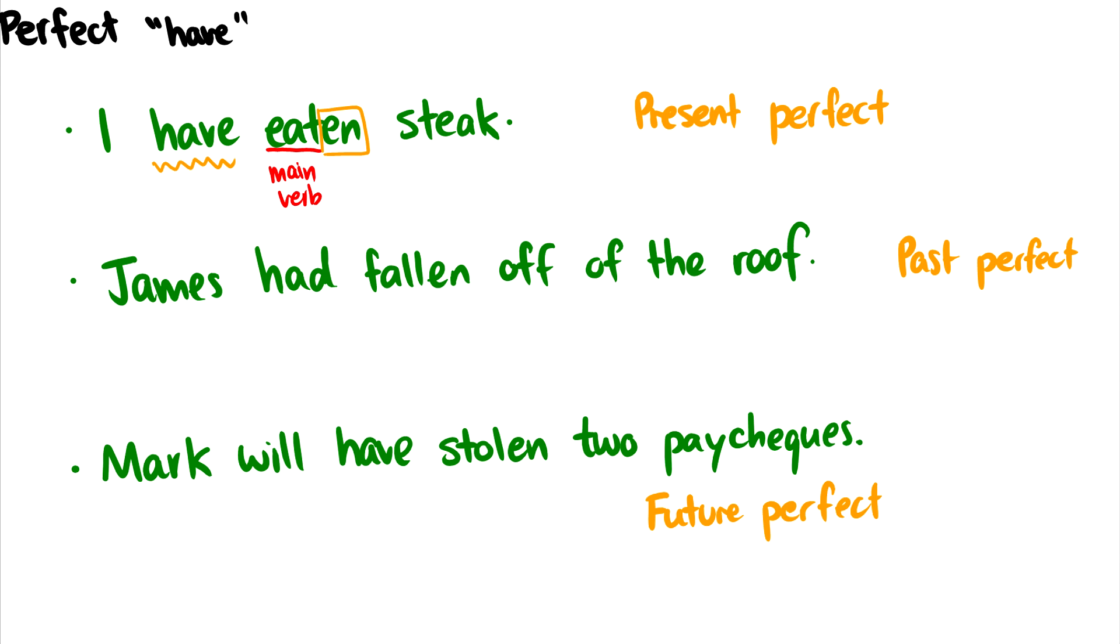Meaning, previously, some eating occurred and that eating was with steak. This is the present perfect because have is in the present tense and the verb eaten has this perfect morphology on it.